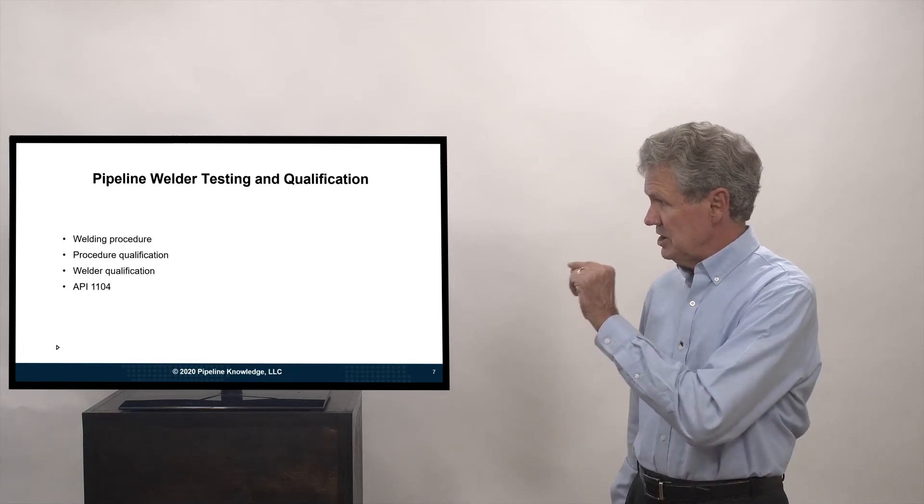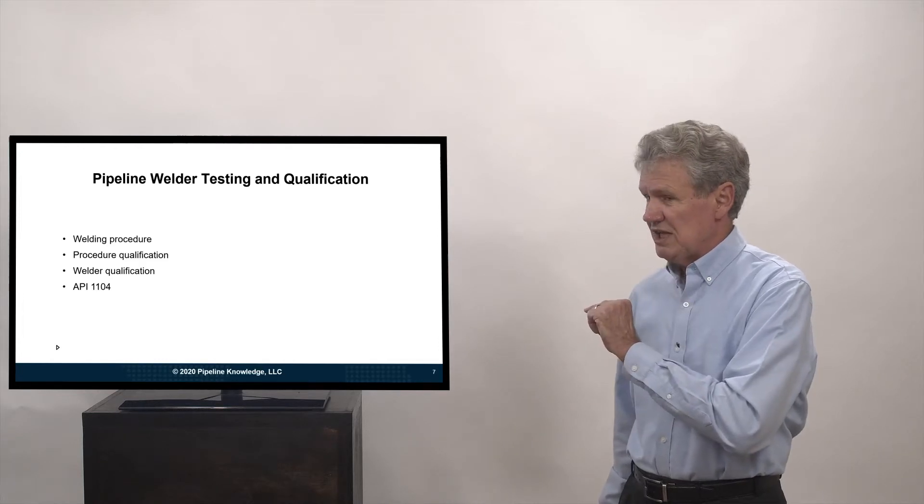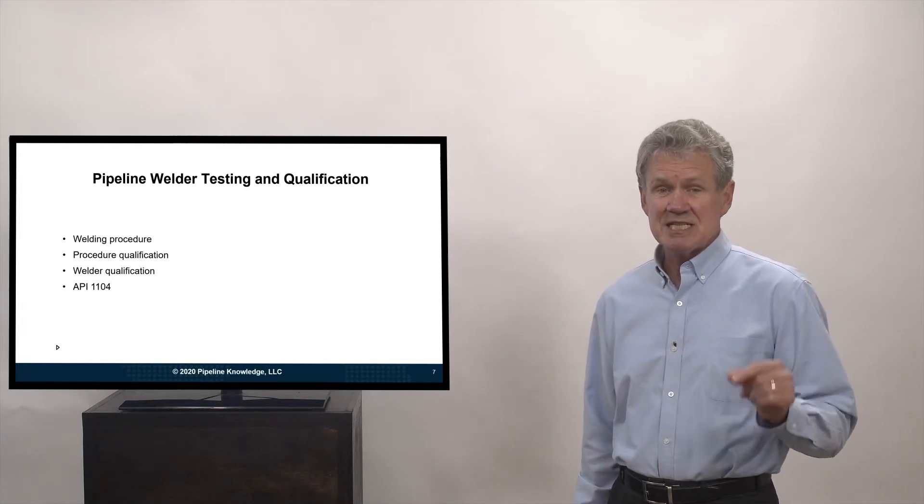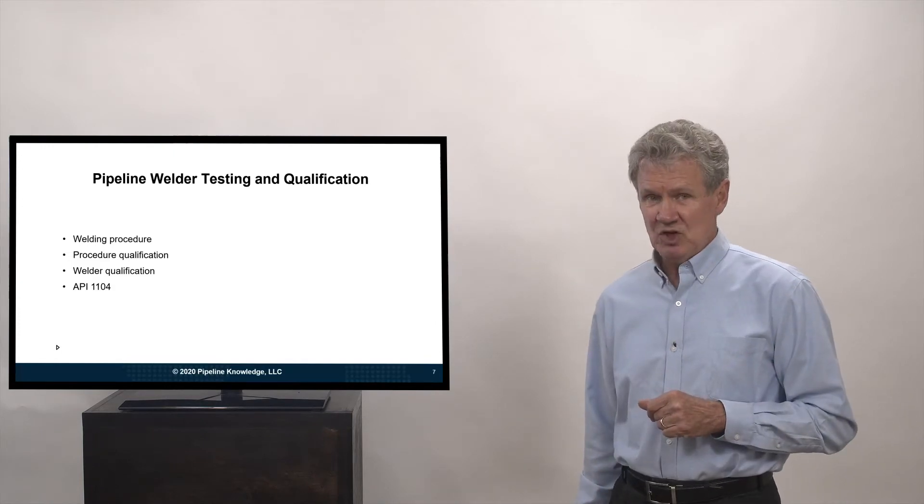So we have a welding procedure, we qualify the procedure, we have welder qualification, and the API standard we typically use is standard 1104.